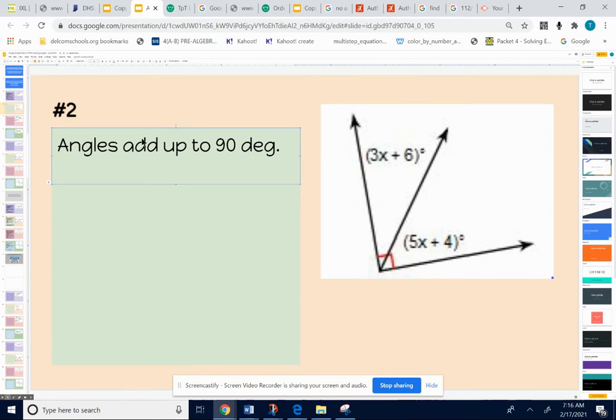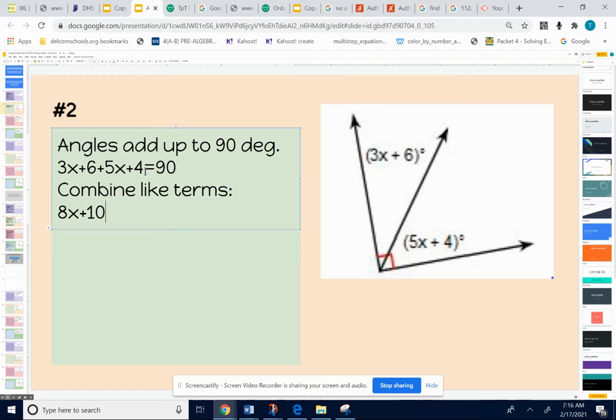So I'm going to write an equation that shows that. I'm going to show that if I take 3x plus 6 and I add it to 5x plus 4, I'm going to get a total of 90. So I'm just going to solve that equation for x. The relationship that they add up to 90 allows me to write that equation. To solve, combine like terms first. 3x plus 5x is 8x. 6 plus 4 is 10. So I get 8x plus 10 is equal to 90.